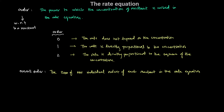Let's look at an example. Say we have A and B reacting to form C, with a catalyst D. The rate equation for this reaction takes the form: rate = k × [A]ᵐ × [B]ⁿ × [D]ᵖ, where the rate is expressed as a product of k times the concentrations of each reactant and catalyst raised to some power.